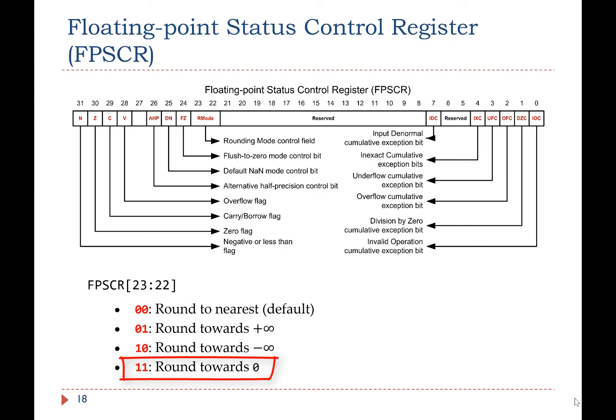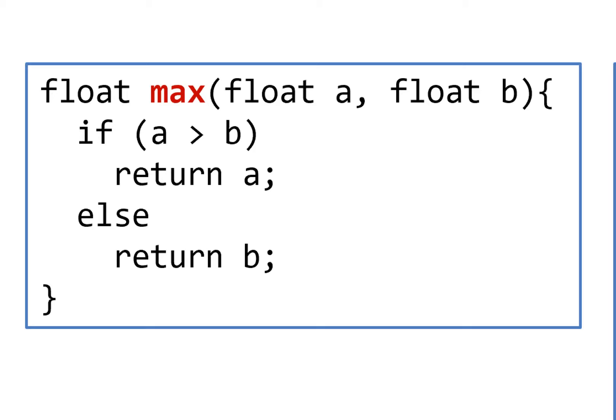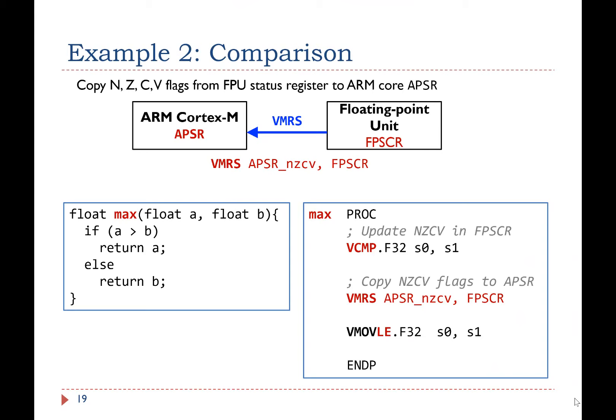Now, let's look at the comparison instruction. In this C code, the max function returns the larger one among float A and float B. Pay attention here. The Floating Point Comparison Instruction, VCMP, updates the NZCV flags of the FPU's Status Control Register, FPSCR, not the Cortex-M's Application Program Status Register, APSR. Therefore, in order to run conditionally executed code or any conditional branch instructions, software must copy the NZCV flags from the FPU's FPSCR to the Cortex-M's APSR.